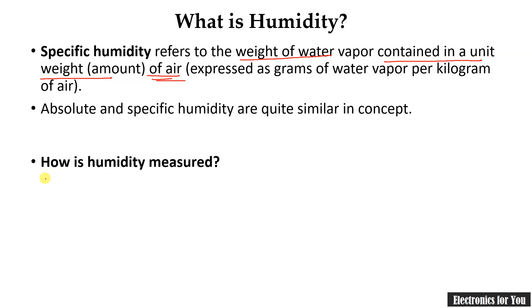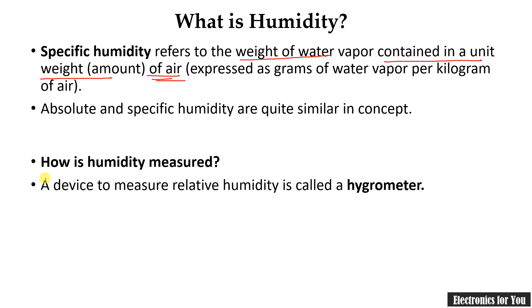How is humidity measured? Humidity is measured using a special device called a hygrometer. Let's see the classification of hygrometers first.